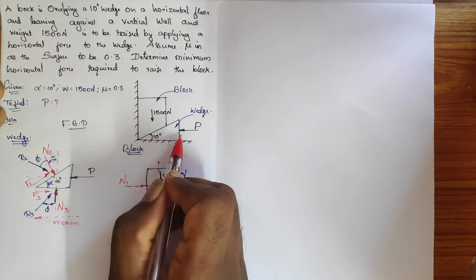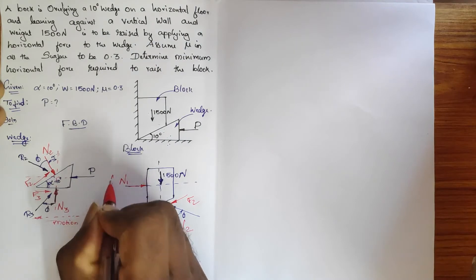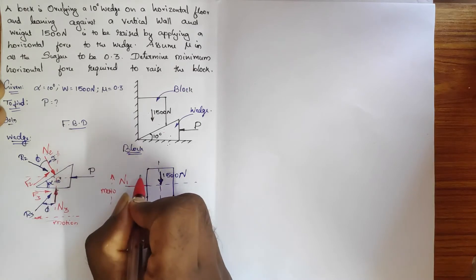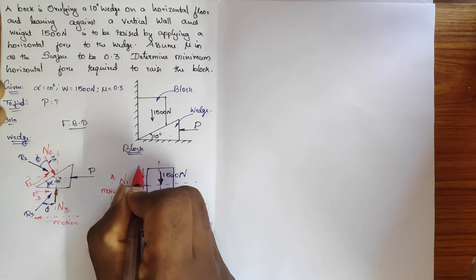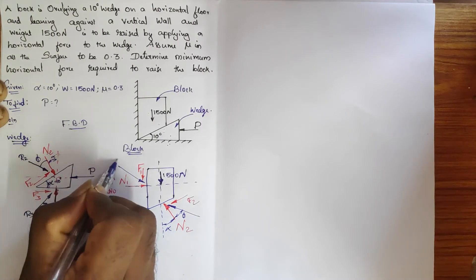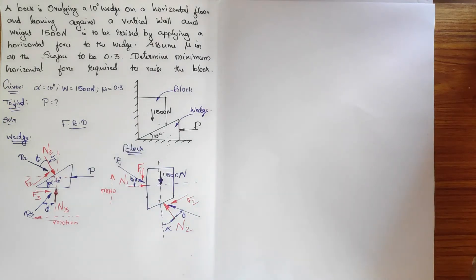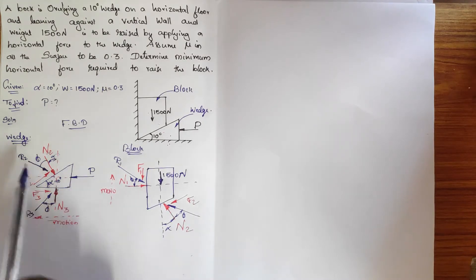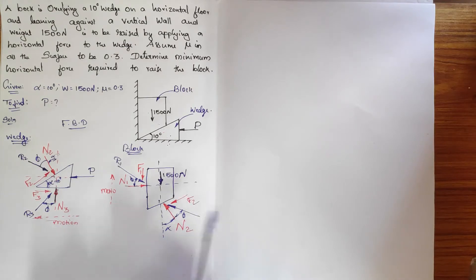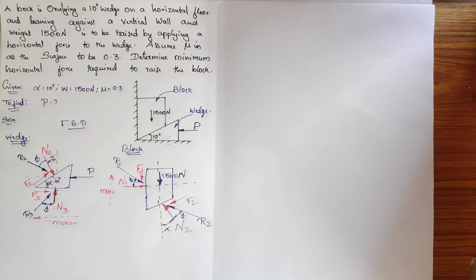At the contact between block and wall, the normal reaction N1 acts horizontally at 90 degrees to the wall, and the friction force F1 acts downward — because when you push the wedge, the block rises upward, so friction opposes by acting downward. The resultant R1 makes angle phi with the normal. So the block has three forces: R1, R2, and the self-weight 1500 Newton.